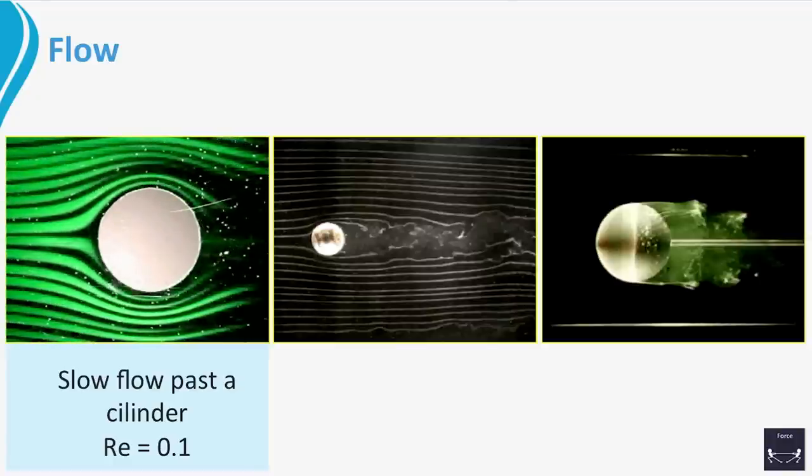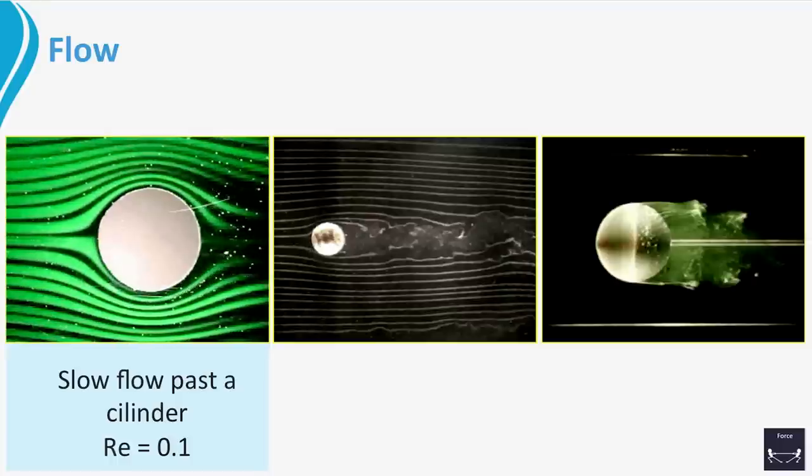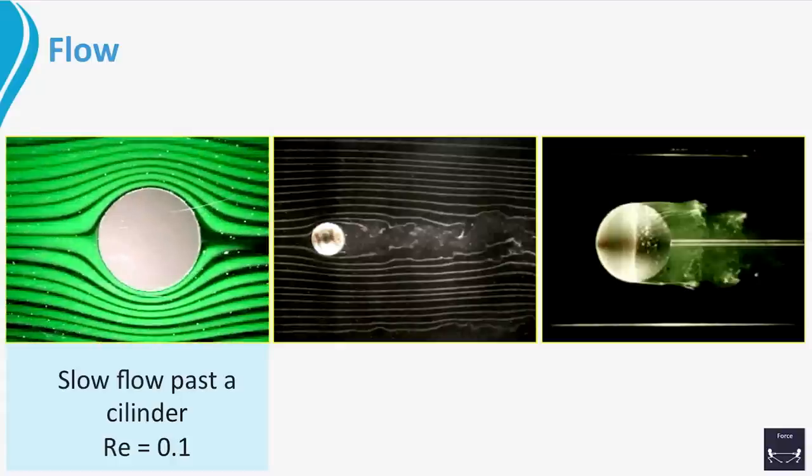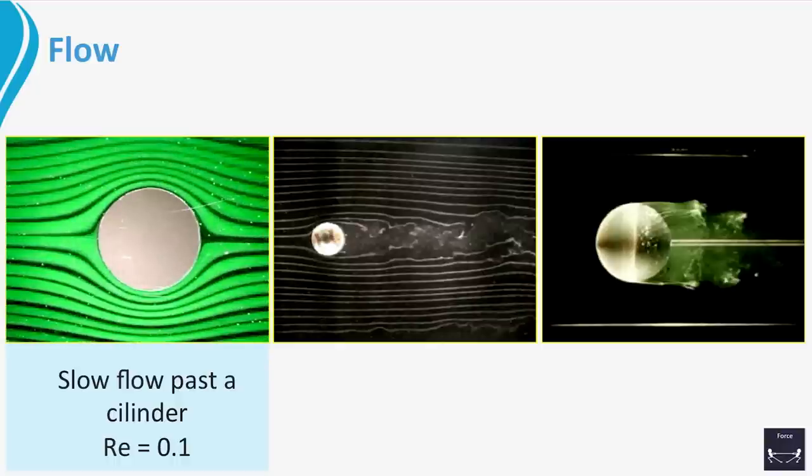You see the fluid neatly flowing around the cylinder and at the back following the cylinder shape. This is flow at low Reynolds numbers. The fluid can still follow the shape of the object. In these cases it has been found that the drag force is proportional to the velocity to the power 1.